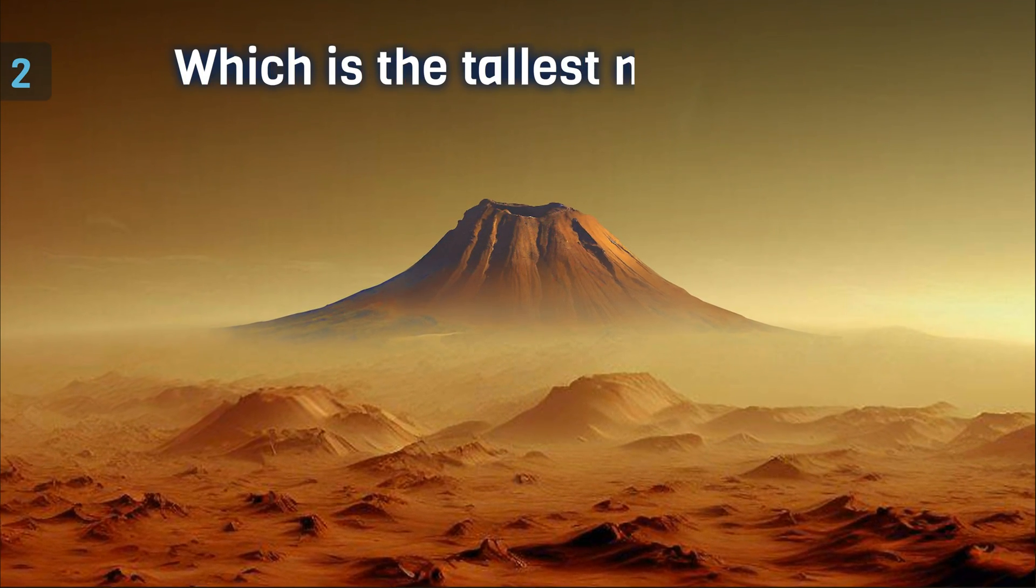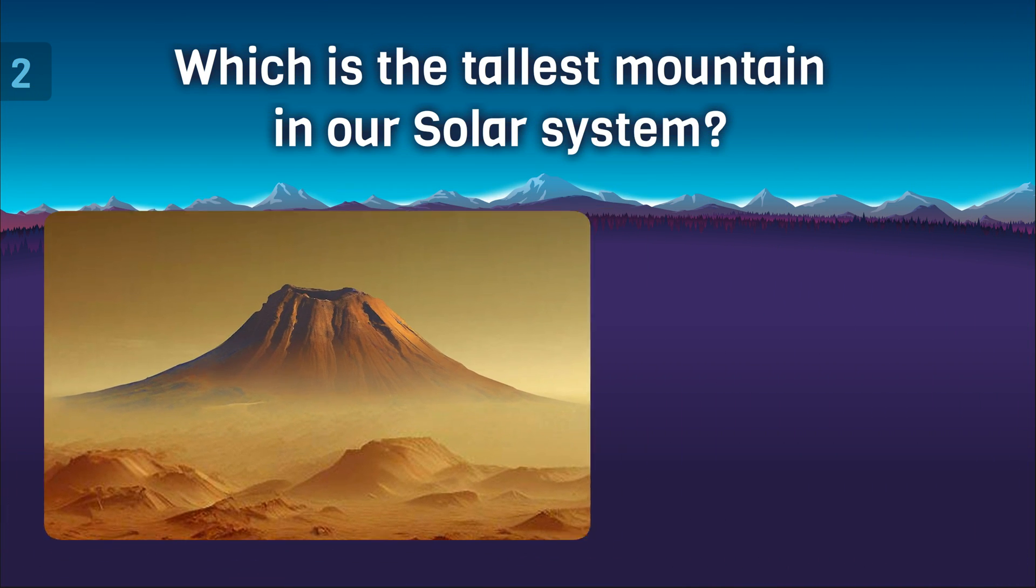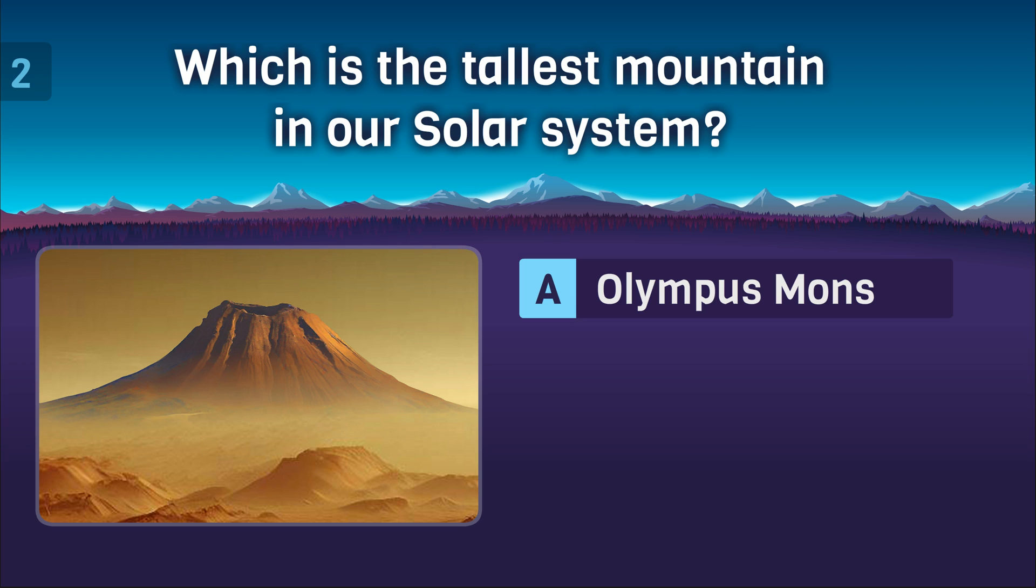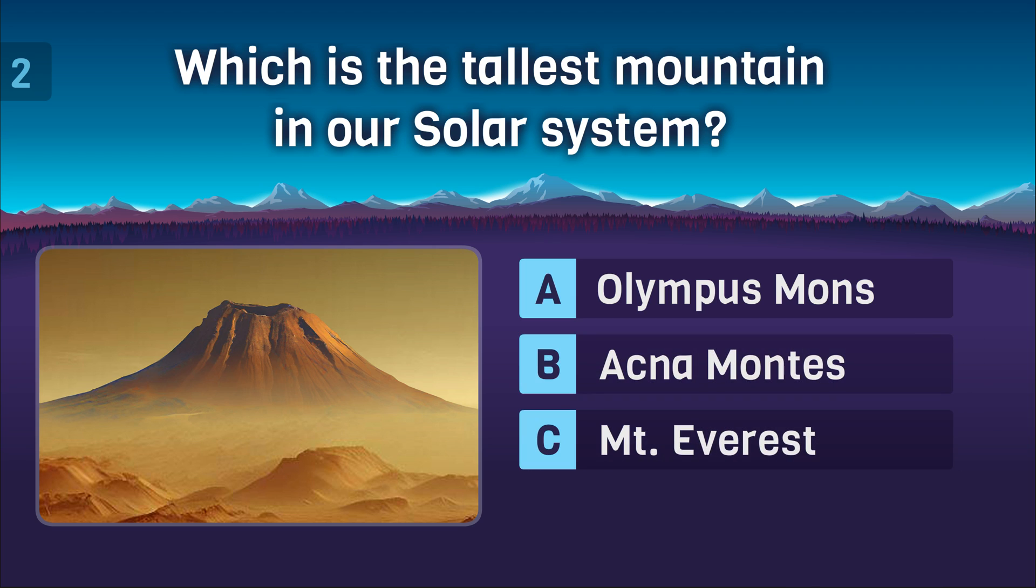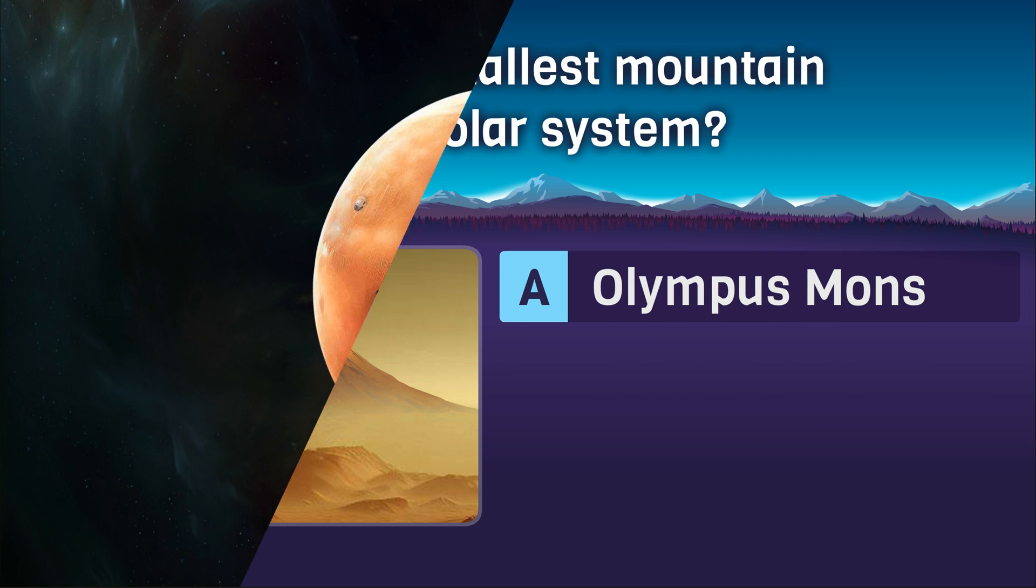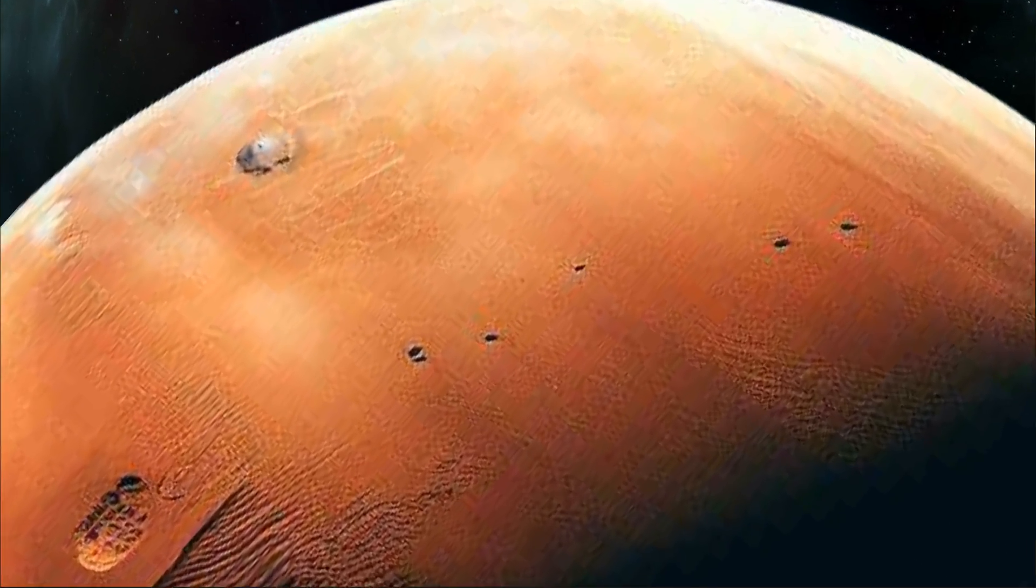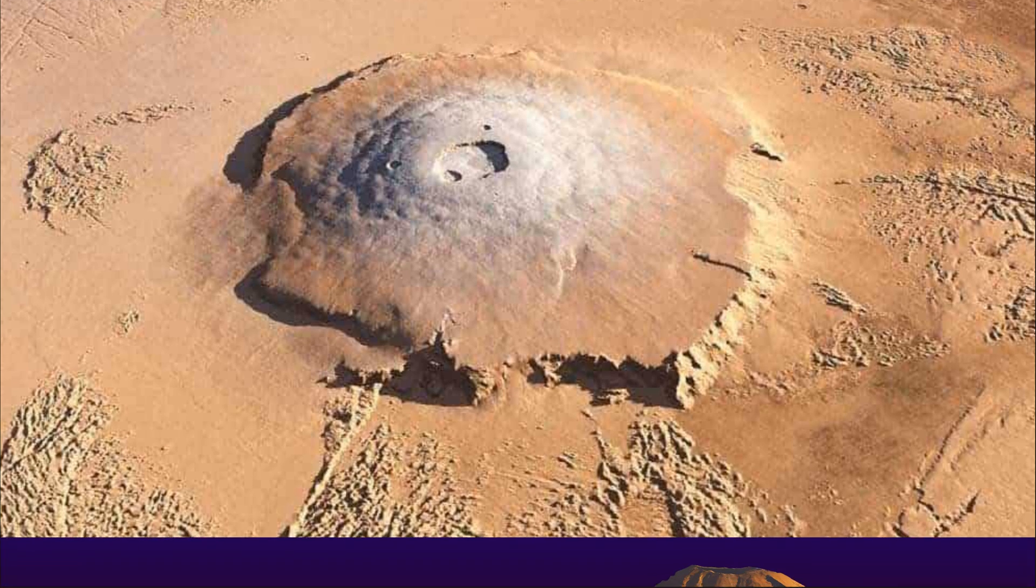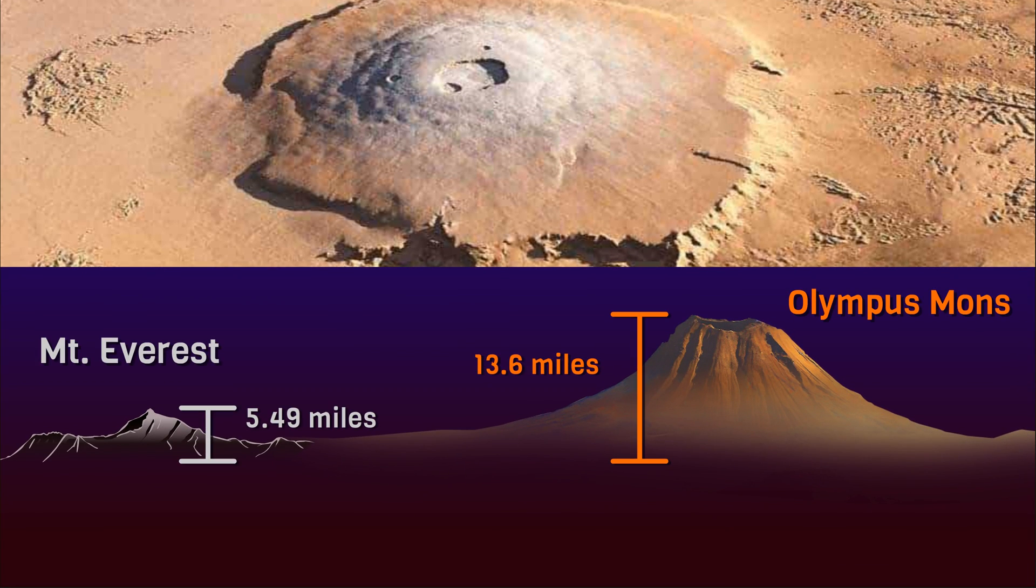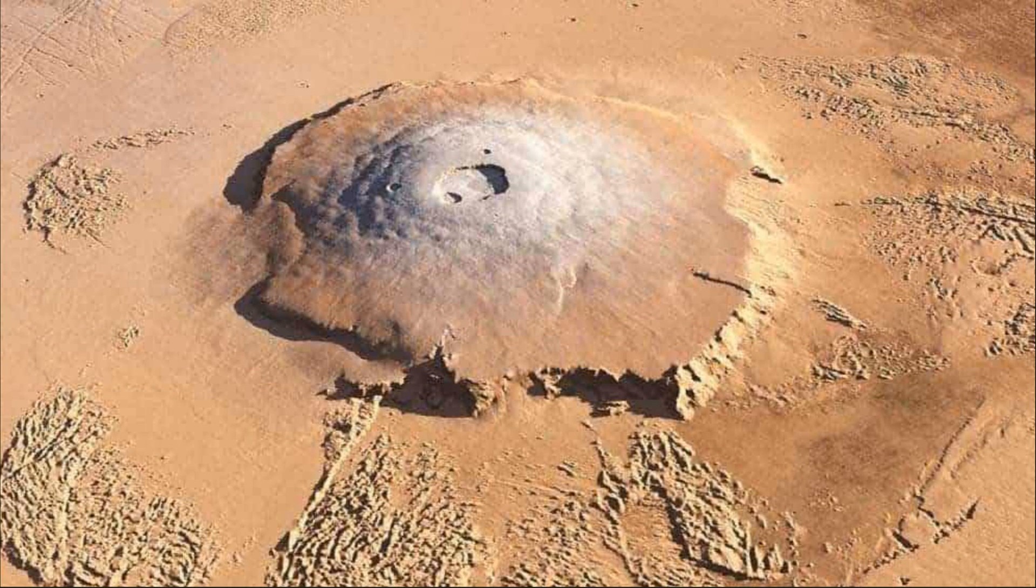Moving on to the next question. Which is the tallest mountain in our solar system? Olympus Mons, Echnomontes, or Mount Everest? The right answer is Olympus Mons. It is a giant volcano on Mars. Olympus Mons is 13.6 miles tall, which is three times higher than Mount Everest. It covers an area of about 300,000 square kilometers, which is almost the same as Italy.